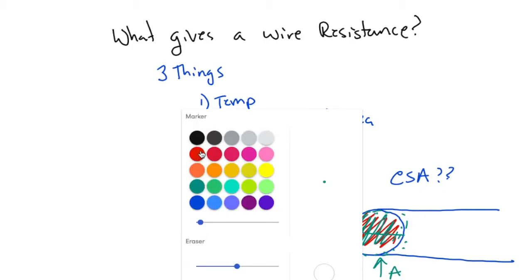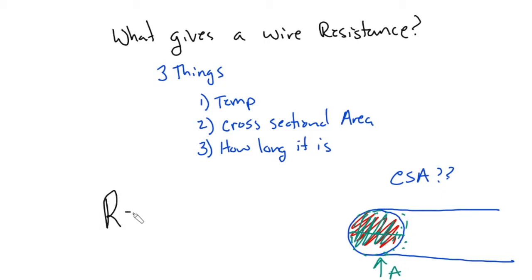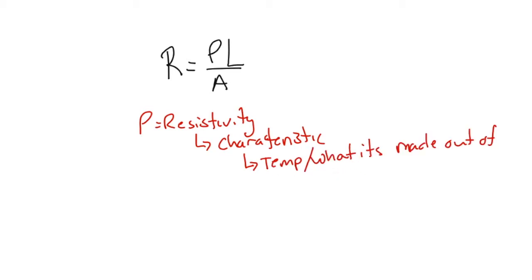And these three things are shown in the second resistance formula, which says R equals a new variable here, which is going to be used to represent two things. And we have L and we have A. R equals, this is rho. It's a Greek symbol, similar to when we did momentum. This is L and this is A. Now what rho stands for is resistivity. And all resistivity is a characteristic. So this is the temp. And also what it's made out of. Meaning, is it made out of copper, silver, gold, or other conductors?